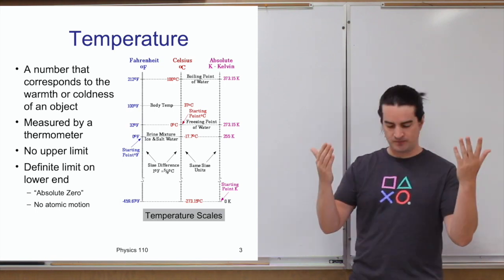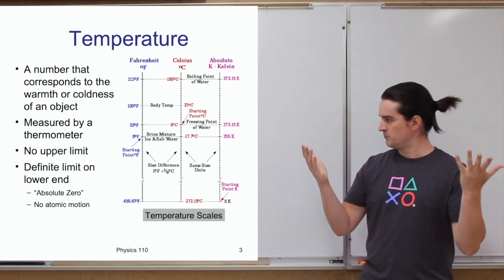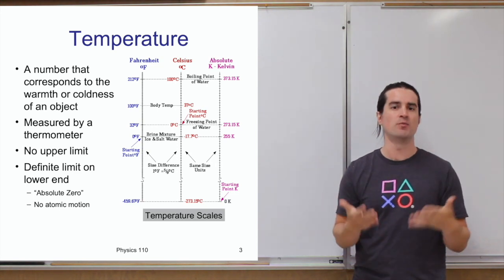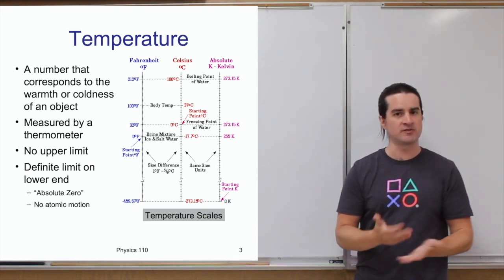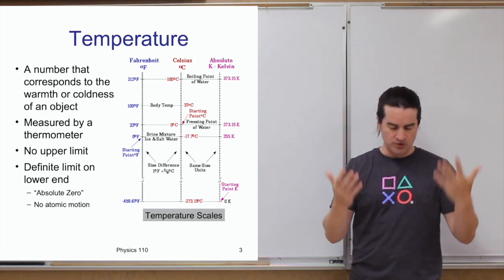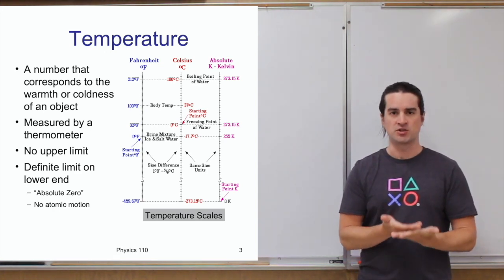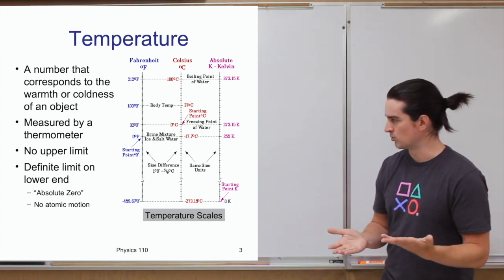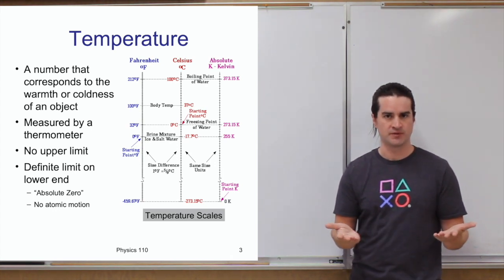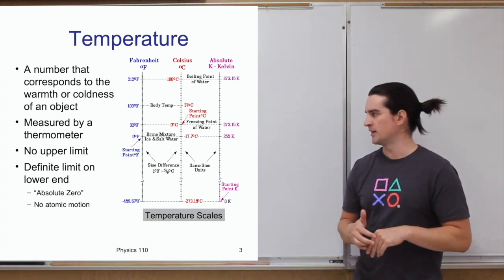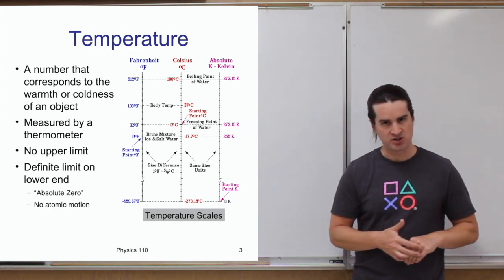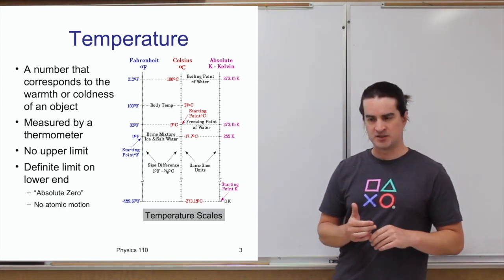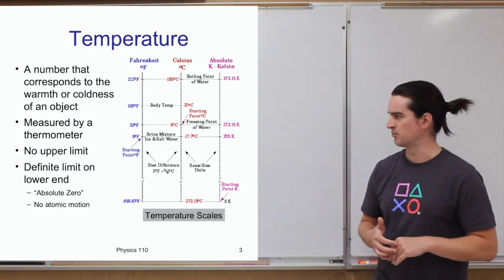The lower limit is where we end up cooling things down, reducing the temperature so much that there would be no motion at all. Temperature is the measure of the average amount of motion, so if you go further and further down and eventually there's just no motion — atoms have stopped entirely — that would be zero, what we call absolute zero. That is a definite lower limit, because you can't have less than no motion, and in fact it's a limit we haven't really been able to reach.